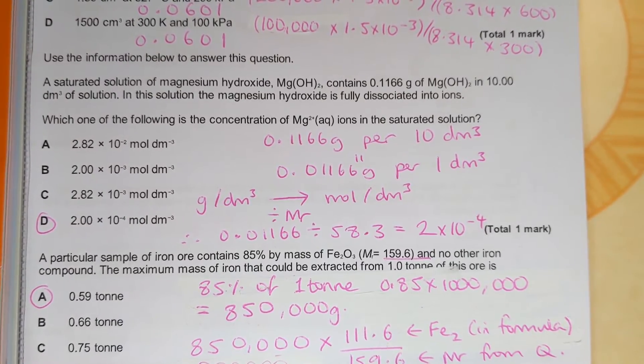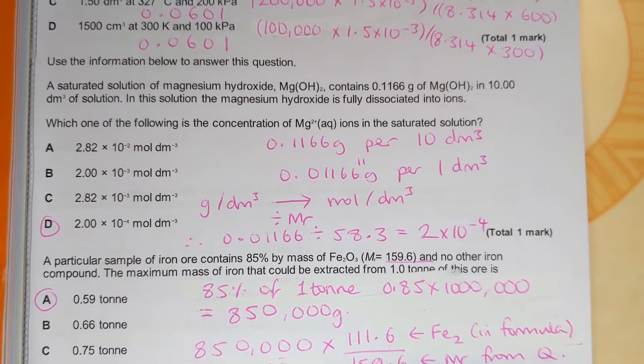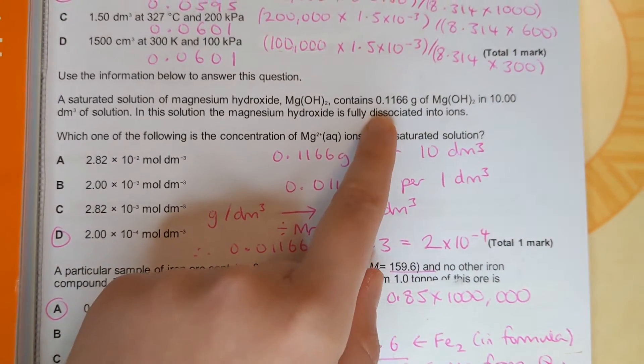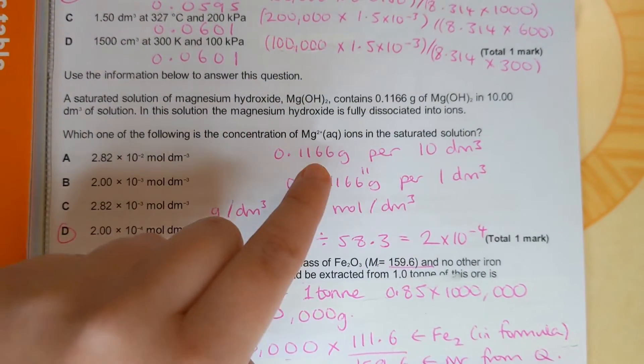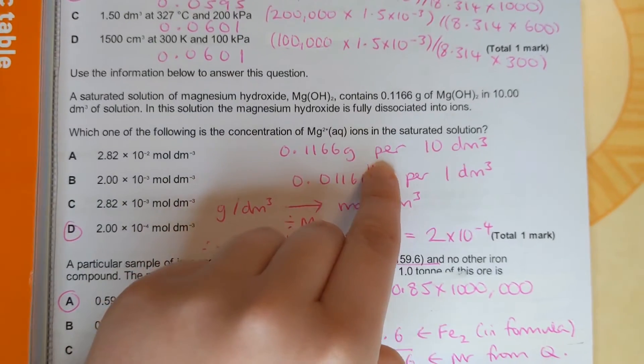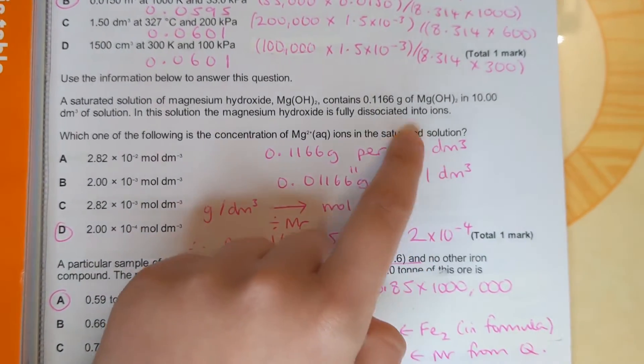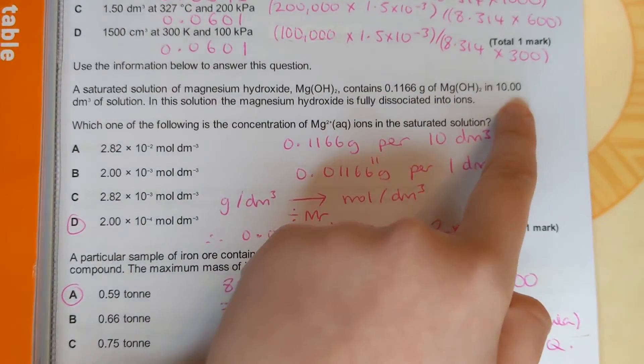And it's quite a tricky one. So first of all I've written down some bits from the question while I was thinking about what to do first. So we're given a mass per 10 decimeters cubed, this is in 10 decimeters cubed. Then the first thing I did is convert that into a mass per decimeters cubed and that is a unit of concentration.